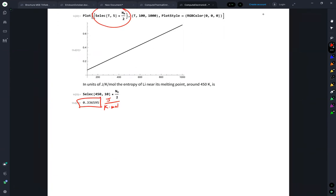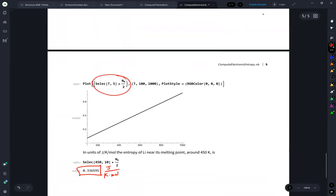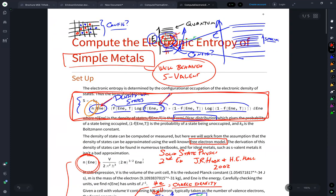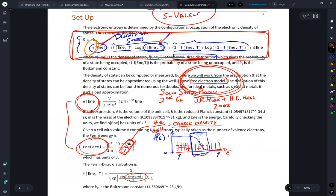So this is how you compute the electronic contribution to the entropy. It's small compared to, for example, configurational entropies and the entropy of formation typically. Maybe it's one to two orders of magnitude smaller, but it's still non-trivial. And this was for an ideal metal that can be computed using the free electron model, but if you can compute your density of states, then you can use this for any metal you want.